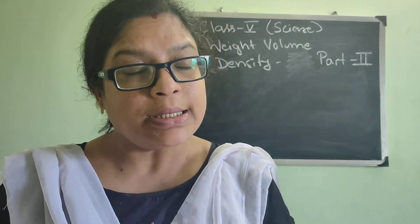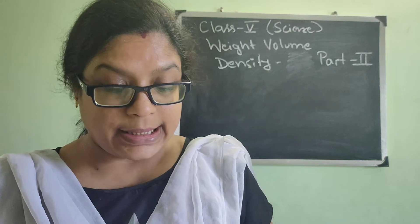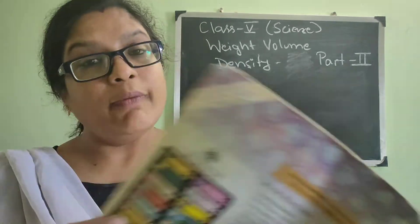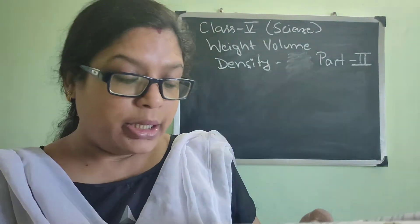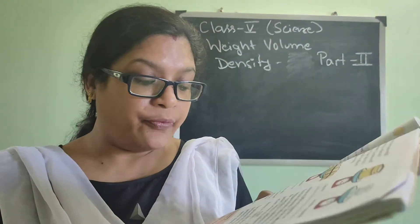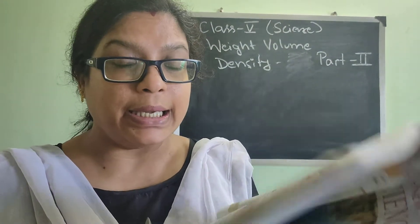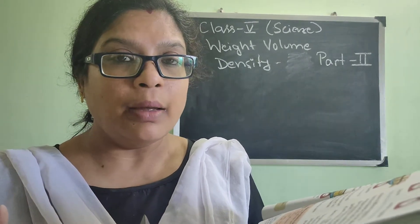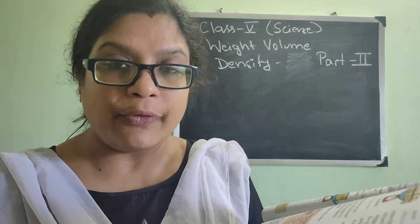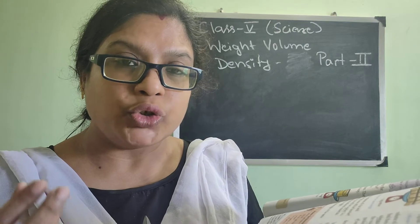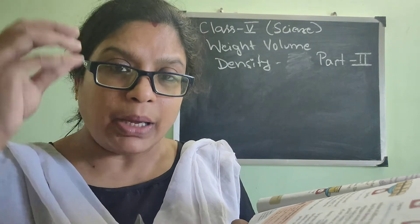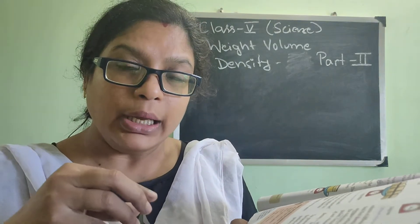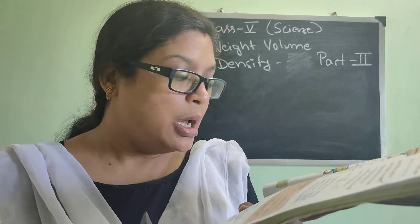It also differs depending on density. Now we will continue to the next part — page 93, floating and sinking. We have seen that many big things are floating, and a very small stone chip may be sinking in the water. How is that possible?